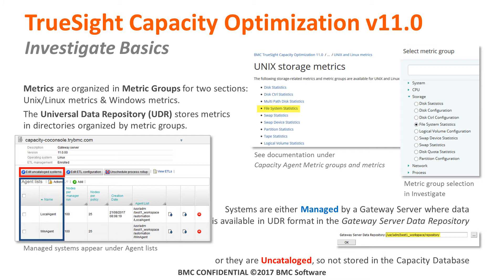Once you have added the gateway server in the TrueSight console, you can see two types of systems. Either you created a manager run and configured the ETL, which publishes the data warehouse with new data, or you have systems not included in an ETL — but you are able to look at both with Investigate. The first are managed systems, where data is also available in the data repository on the gateway server. Or they are categorized as uncatalogued, where the gateway server talks to the agent and streams data directly from the agent rather than looking at the UDR data.